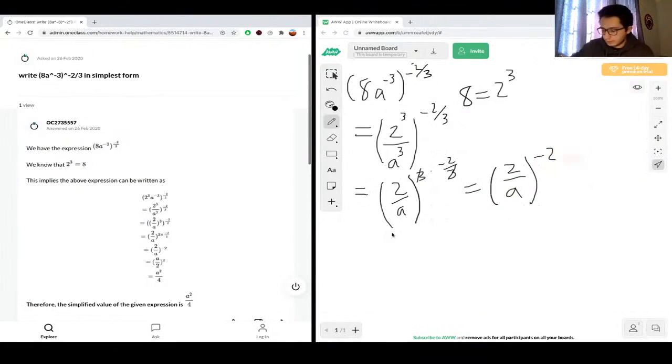Knowing that we have a negative exponent, the negative exponent will flip our fraction here. So (a/2) squared is what we get. And then we can just take the squared and simplify the equation. So we get a squared, and we know 2 squared is 4.